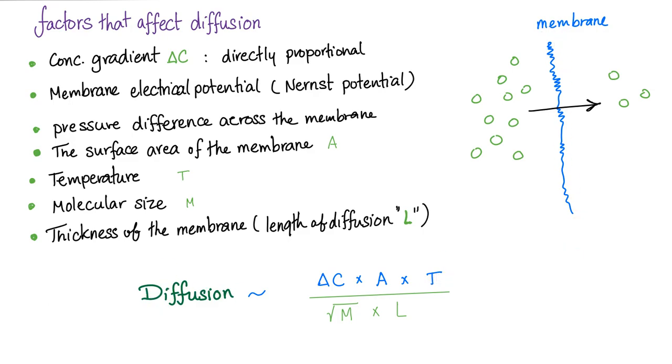Temperature, the higher the temperature, more diffusion. Inversely related to the square root of m, the molecular size. The bigger the molecules, the less the diffusion. L is the length of diffusion or the thickness of the membrane. If this membrane is thick, guess what will happen? Less diffusion.